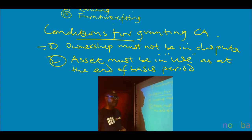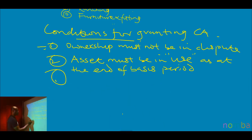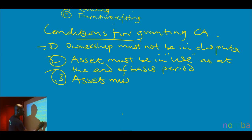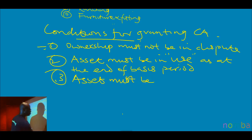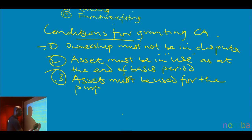Your workers went on strike and they were not working in the factory — the machines are still considered in use. The third condition is that the asset must be used for the purpose of the business.